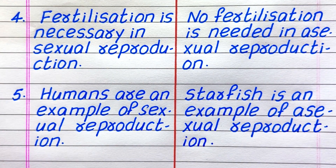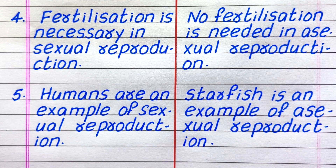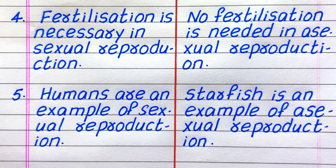Fourth difference: fertilization is necessary in sexual reproduction, while no fertilization is needed in asexual reproduction. Fifth: humans are an example of sexual reproduction, while starfish is an example of asexual reproduction. These are the five differences between sexual and asexual reproduction.